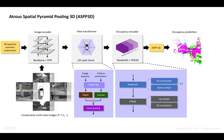Occupancy prediction is a dense prediction task which requires incorporation of large context. We extend spatial pyramid pooling for 2D tasks to learn features with different sampling rates and field of views.